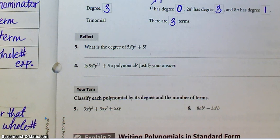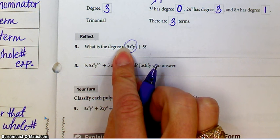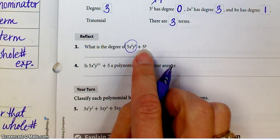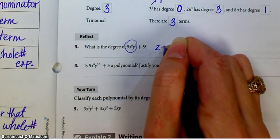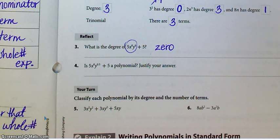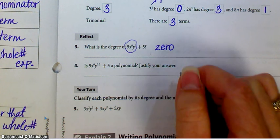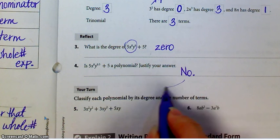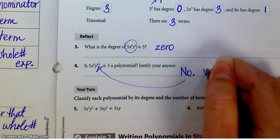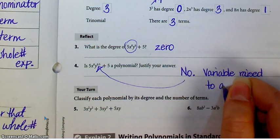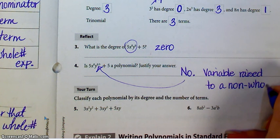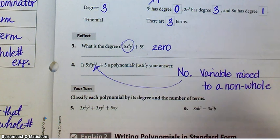What is the degree of 5x⁰y⁰ + 5? The degree of 5 is 0, x's degree is 0, and y's degree is 0, and the second 5 also has degree 0, because you don't have any variables raised to anything except 0. So the degree of this whole binomial is 0. Is 5x to the 0.5 plus 5 a polynomial? No, it is not, because you have a variable raised to a non-whole number, and that is not considered a monomial.